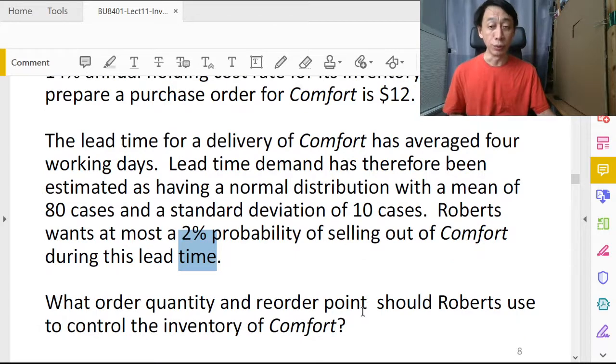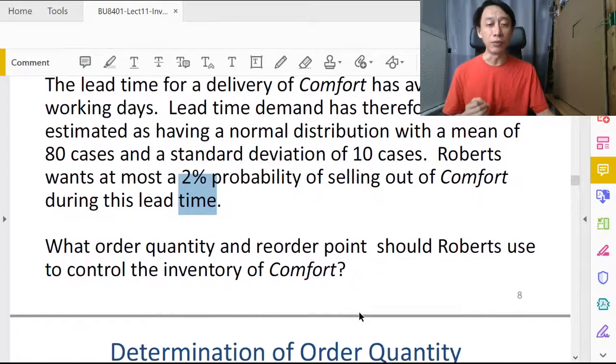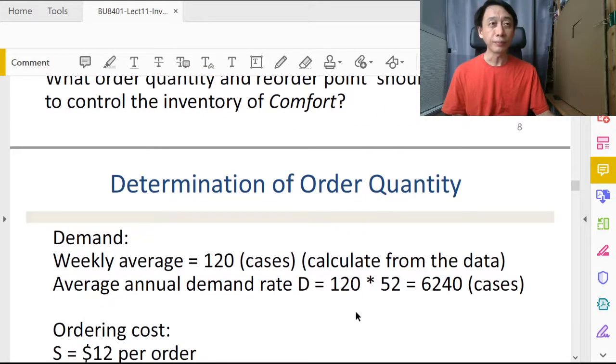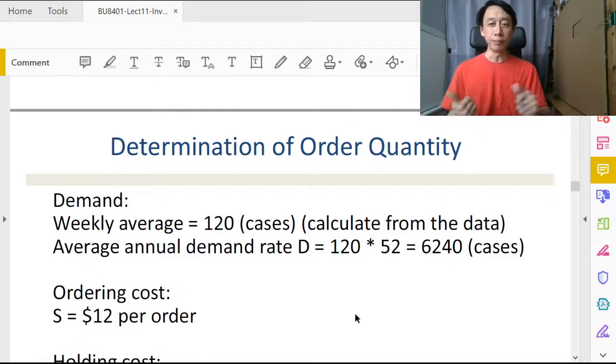Calculate the inventory policy. So between the two numbers, how many to order and when to order, the how many to order part is probably easier because that's just applying the EOQ formula. By writing down all the values, weekly average is 120, therefore annually we have 120 times 52, we have 6240 cases.